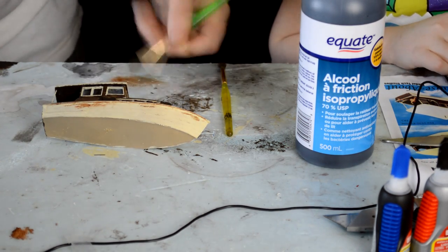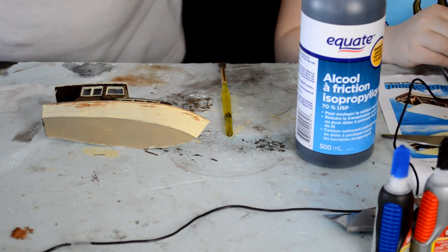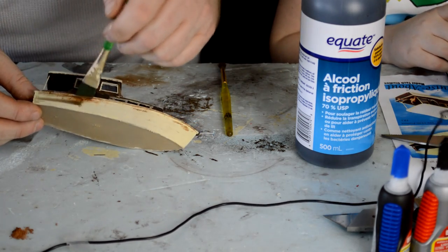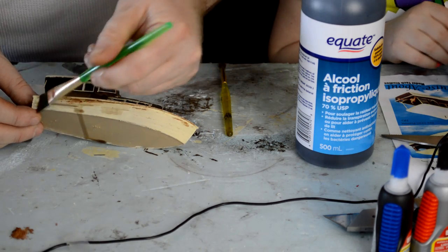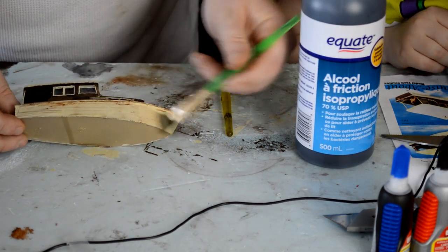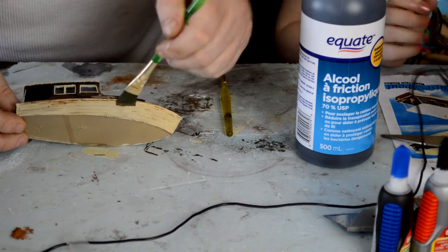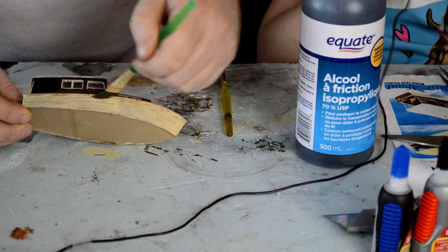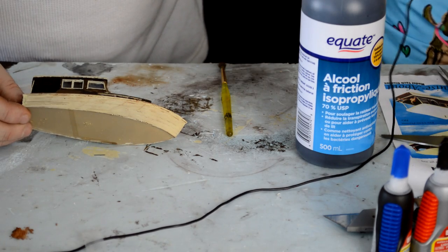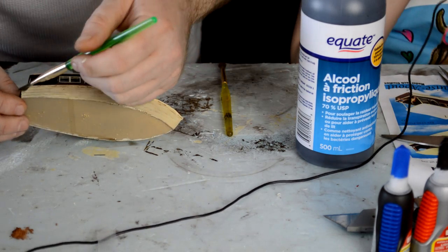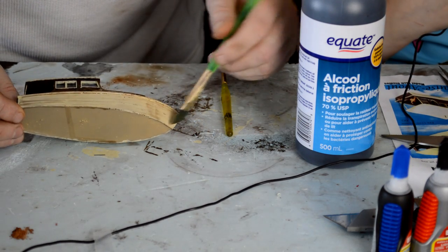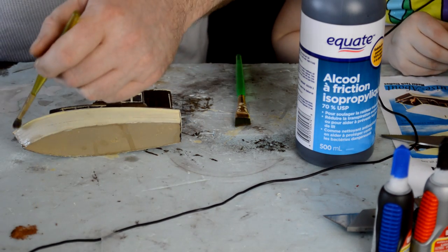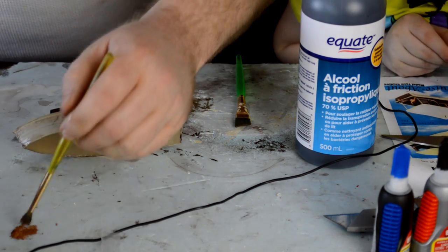Another note is, don't worry about putting too much weathering powders on. At this point, if you're just using alcohol to wet these powders, they won't stick in place and you can wash them all away if you don't like what you see. Even if these dry with your alcohol in place, you can just wet it again with alcohol and remove them all or just tone them down.